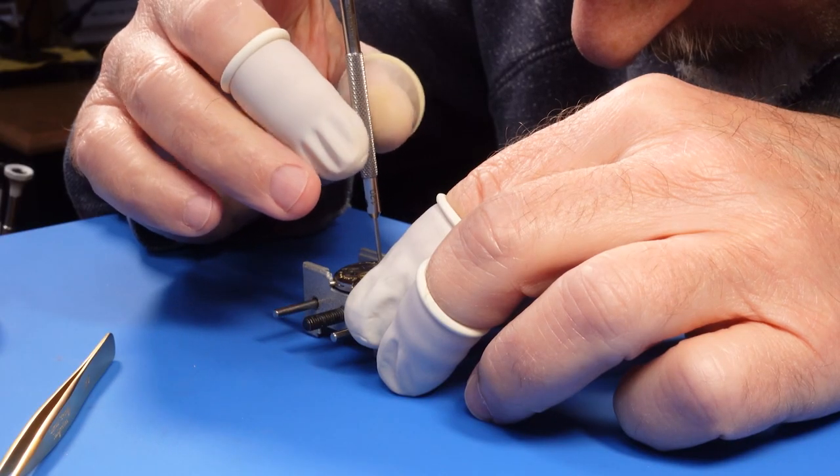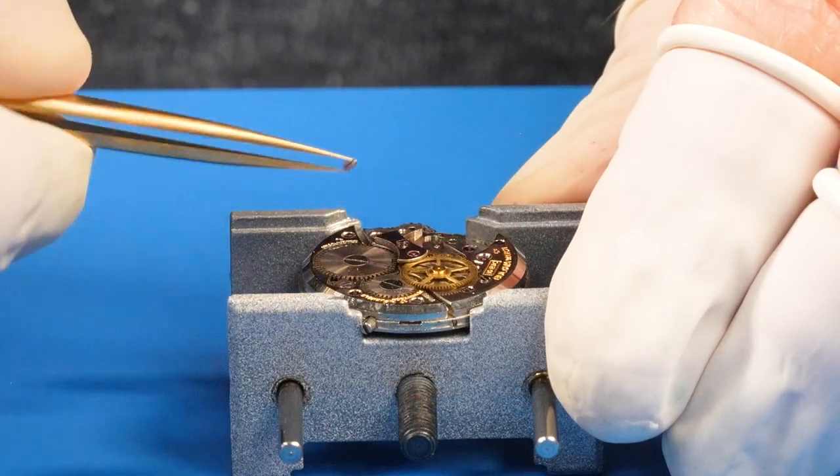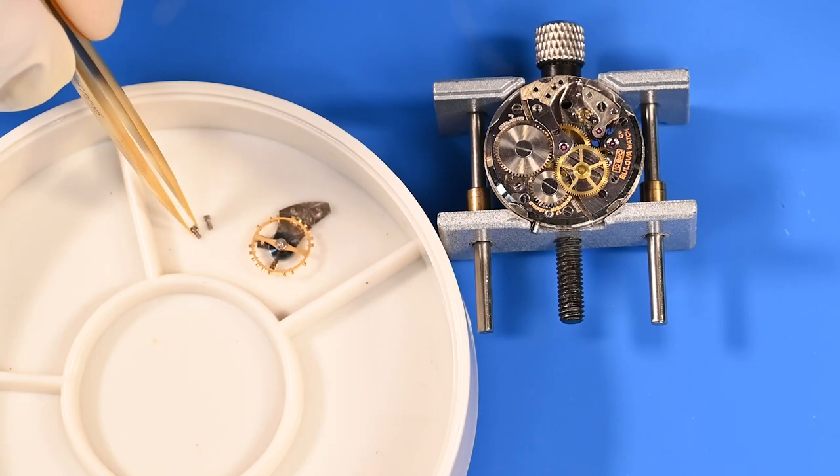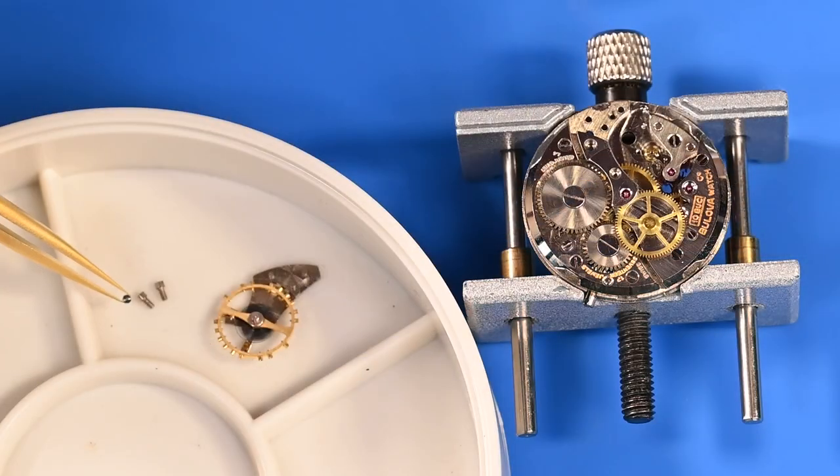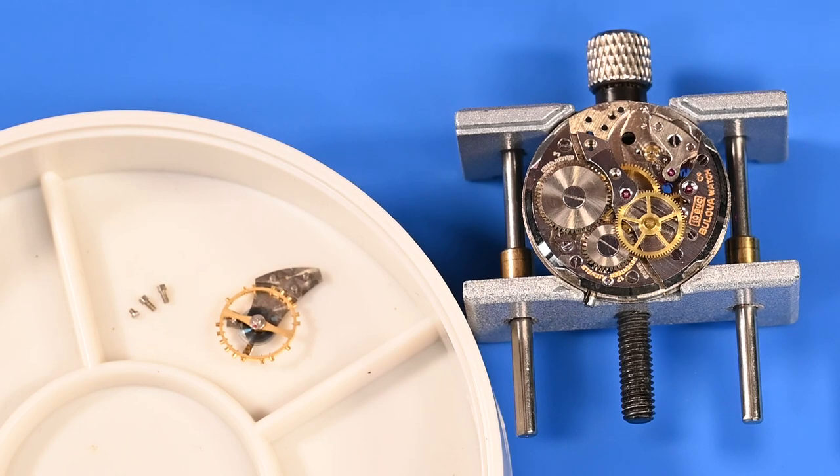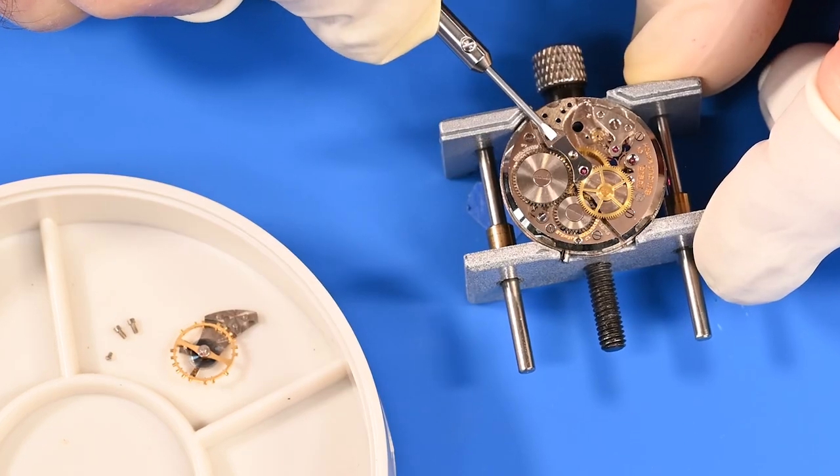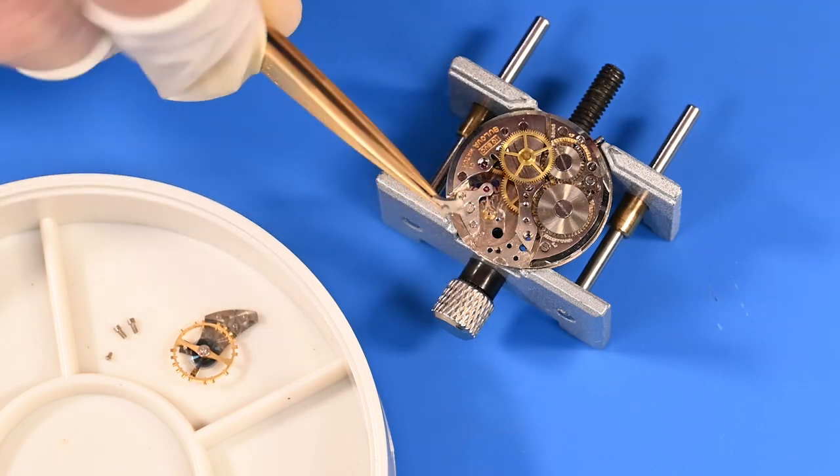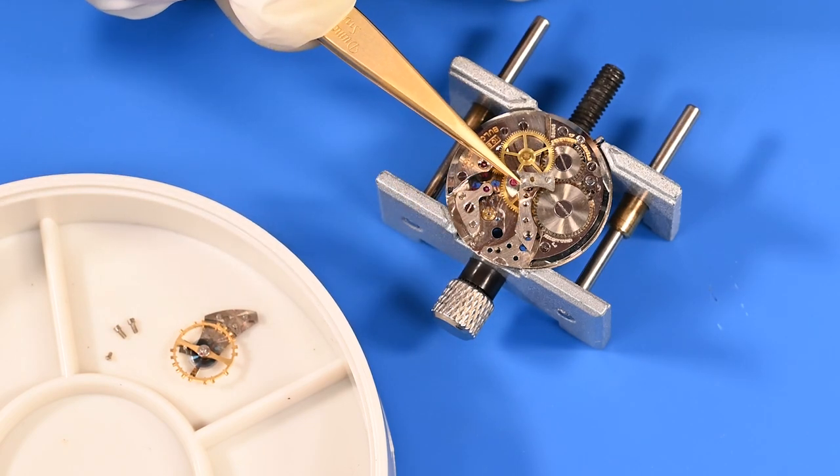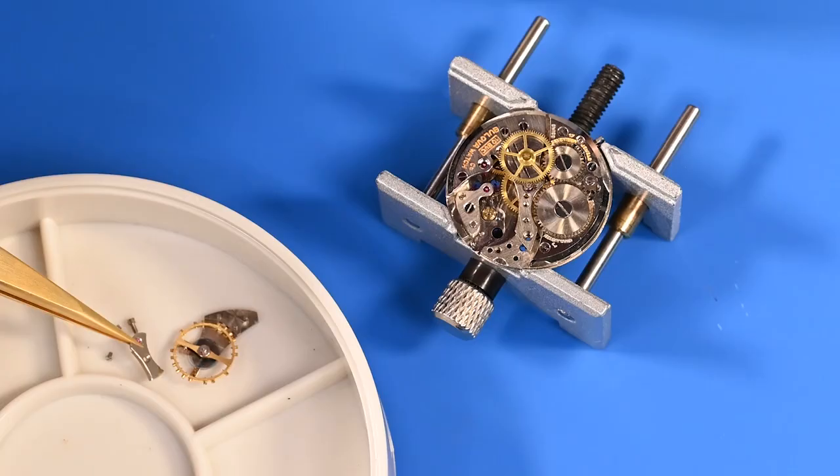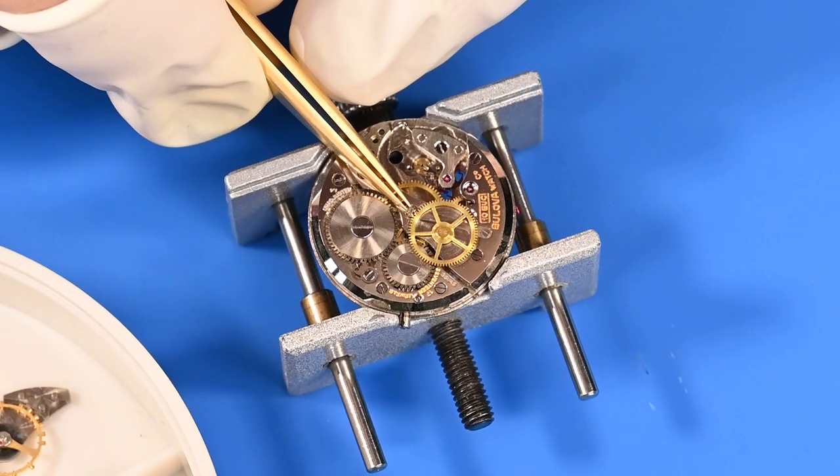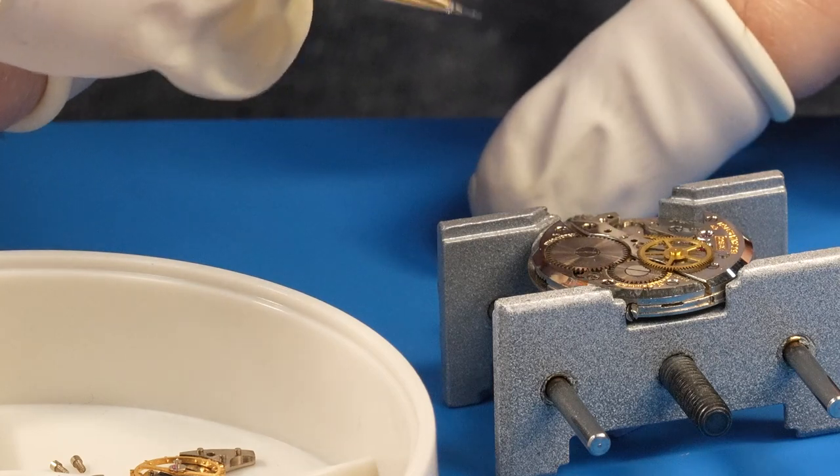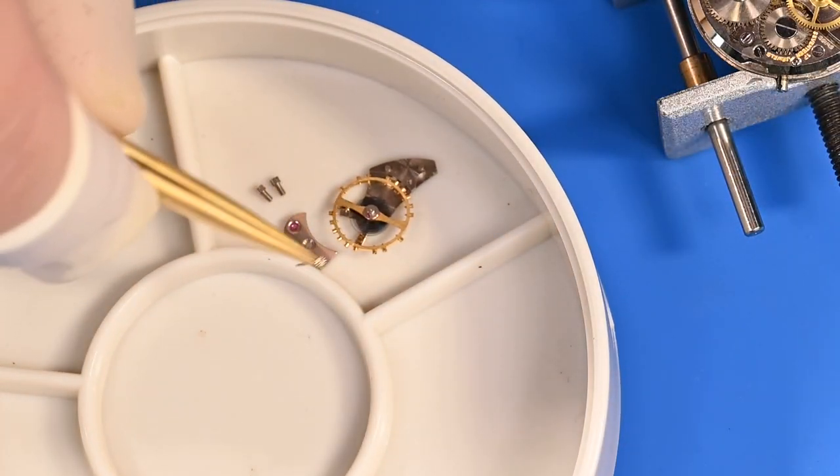The metal plates that hold down the wheels are called bridges. This train wheel bridge looks like it's held down with two big screws and one small screw. What I didn't realize is that there's a small plate with its own jewel holding down the second-hand pinion that is separate. Sometimes you just have to start taking things apart to understand them. It should just lift out. And there we go. There is the second's pinion.